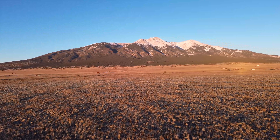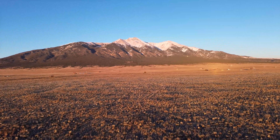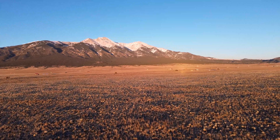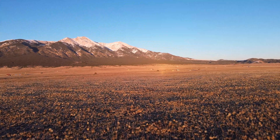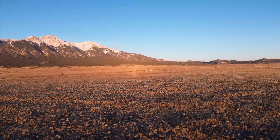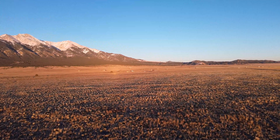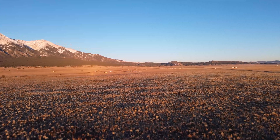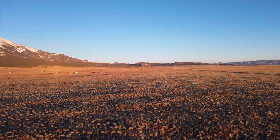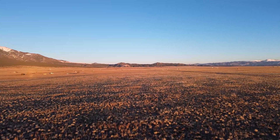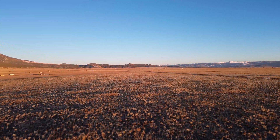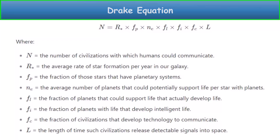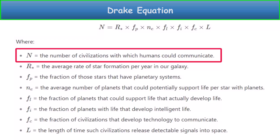Quantifying the odds of extraterrestrial life is challenging, but scientists have developed frameworks to estimate the likelihood, most notably the Drake Equation. This equation, formulated by astrophysicist Frank Drake in 1961, attempts to estimate the number of active, communicative, extraterrestrial civilizations in the Milky Way galaxy. The equation consists of seven variables that we multiply together to get that potential number.